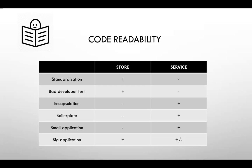Boilerplate is the most discussed point in every article about stores — how much code you need to write to make it work. With stores you need to write a lot more code compared to other solutions. More code generally means it's harder to read. Also, in a small application, you have to write a lot of store code without much benefit — something achievable in two lines with a service requires much more with stores.